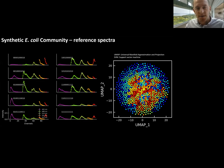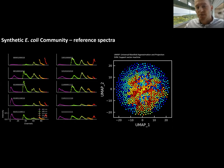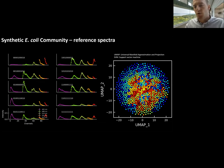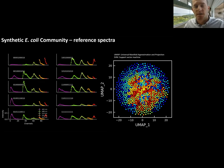We imaged hundreds of thousands of cells for each barcode and represent all data using UMAP dimensional reduction. Every blob in the UMAP consists of about a thousand data points, and these data points are resolved — they don't overlap — already indicating that you can indeed resolve these barcodes. We use this UMAP dimensional reduction followed by a support vector machine to classify these barcodes.